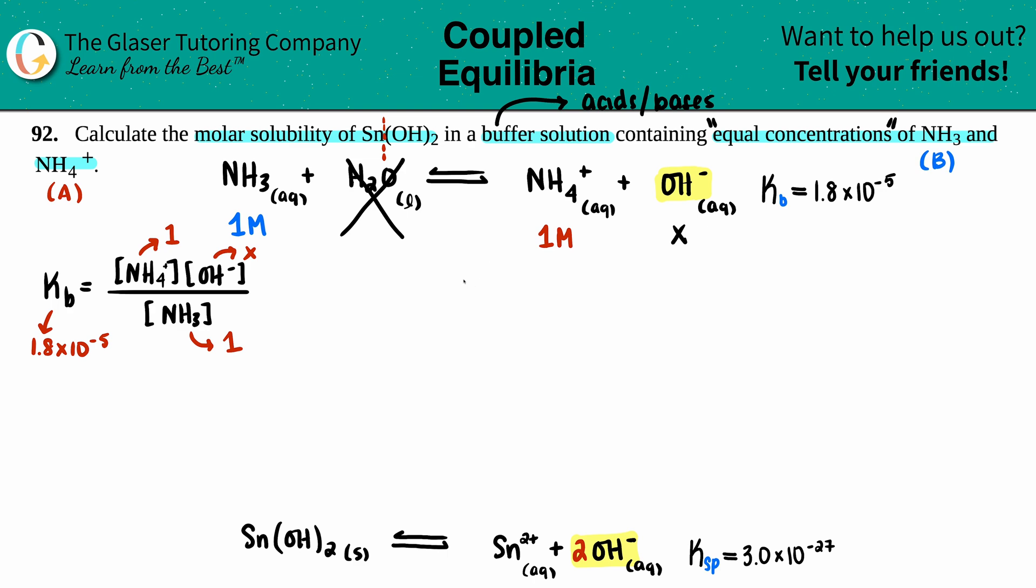We have 1 on top, 1 on the bottom, an x value, and 1.8 times 10 to the negative fifth. If we plug in those values, it would be 1.8 times 10 to the negative fifth equals...